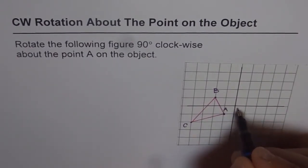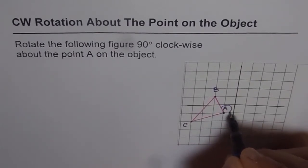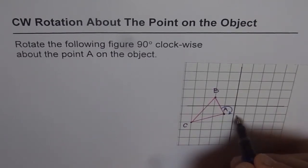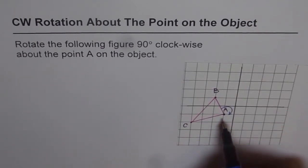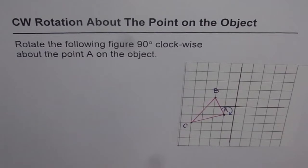Clockwise means rotating in that direction — that is the direction in which we have to rotate. The rotation is about point A, which means A is fixed. So in the final image, A remains at the same point; it will not vary — it will be invariant.